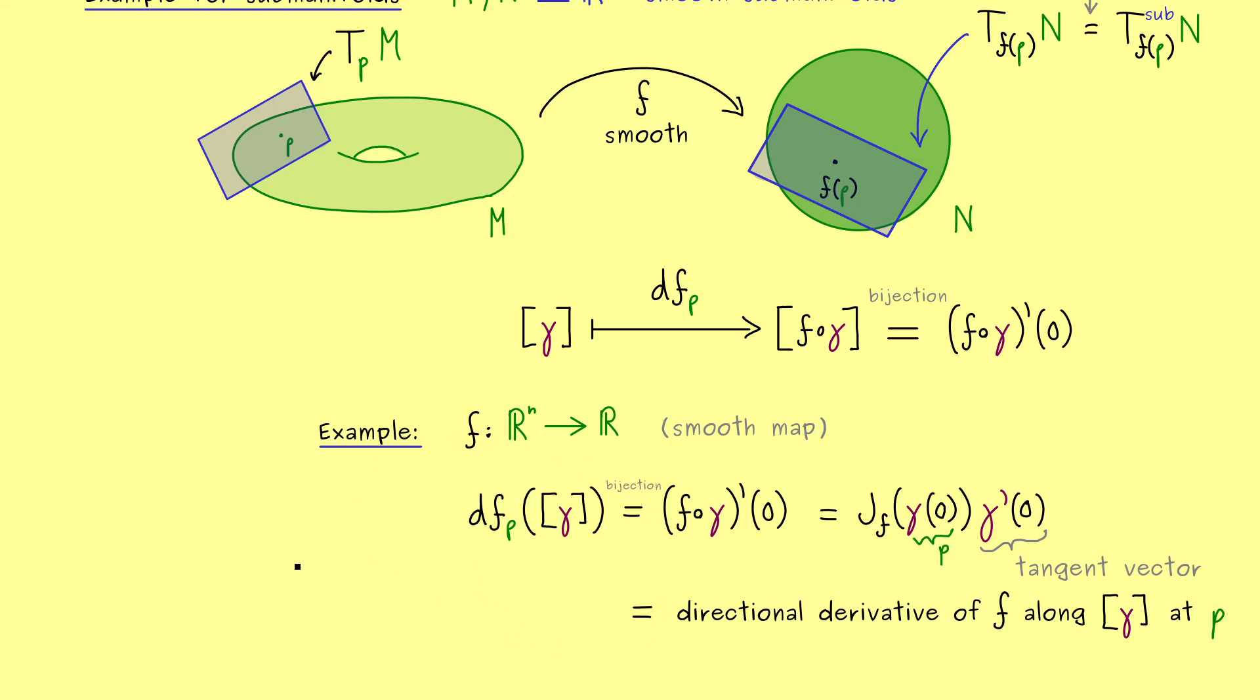For example we should check how the differential looks like if we go into local charts with the manifolds. Because there we would also expect the behavior like a Jacobian matrix. Okay then I would say let's meet there and have a nice day. Bye bye.